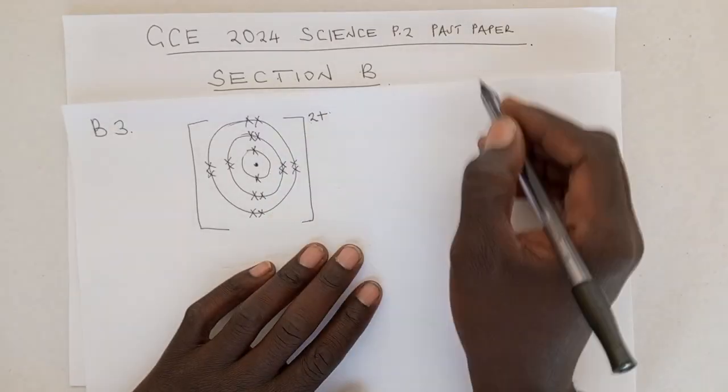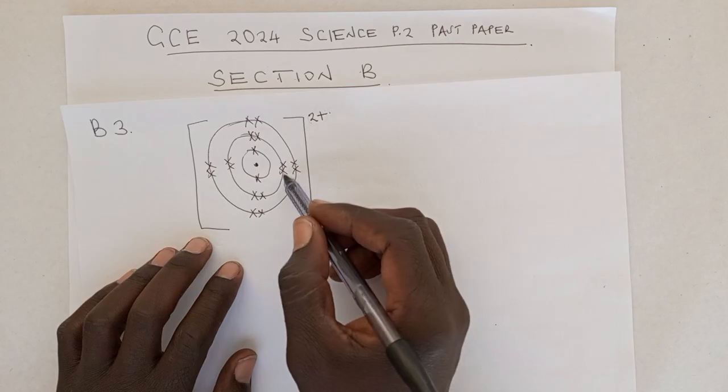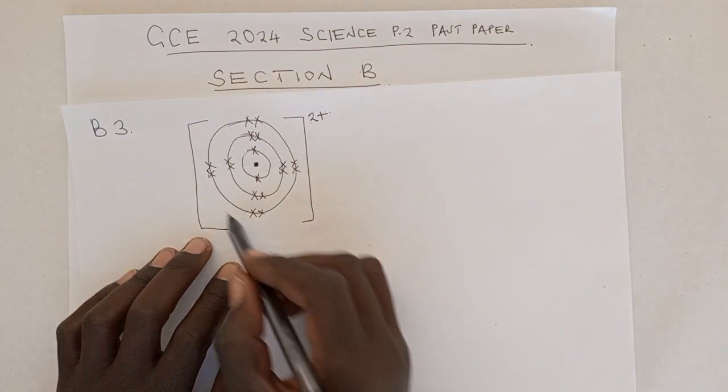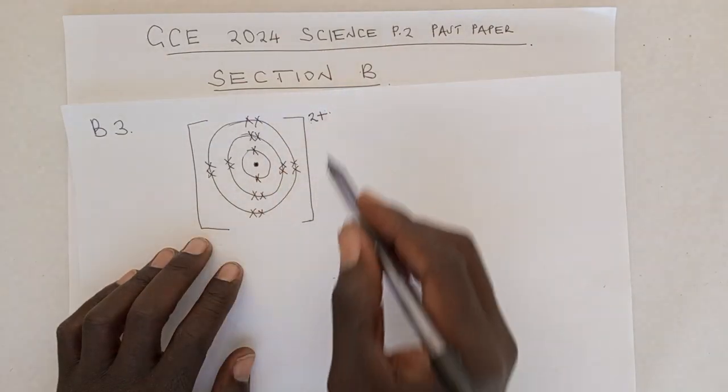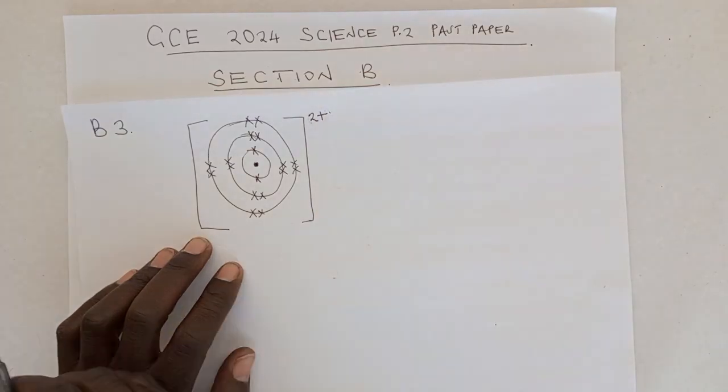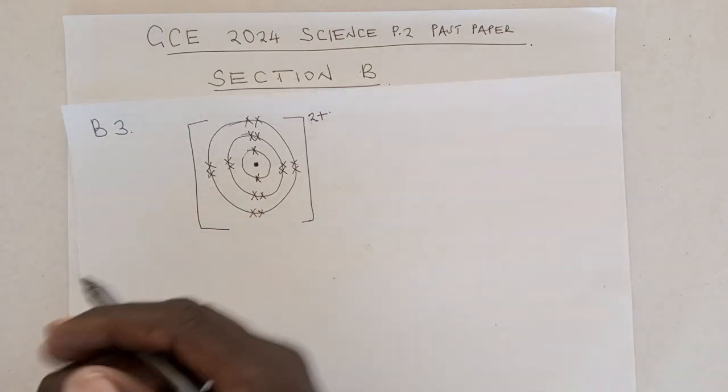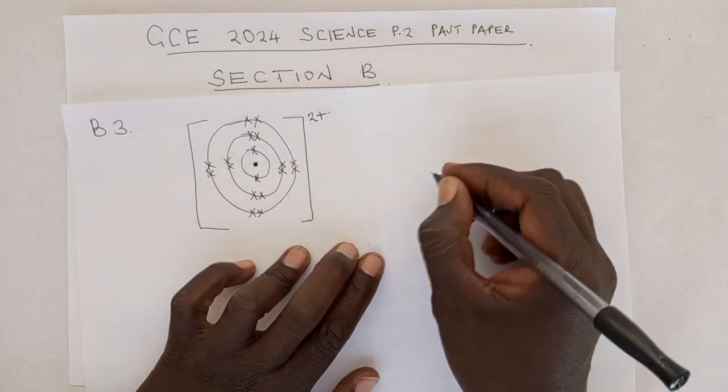So we need to also understand the structure, its structure in atomic form. So because it has lost 2 electrons, this plus simply means it has lost 2 electrons. It must have had, because this is 2, 8, 8, it means as it is right now, it has 18 electrons. But before it lost those electrons, it had 20 electrons. So we know that this is a calcium atom which has lost 2 electrons and has become calcium ion. Before we even go to the equations.